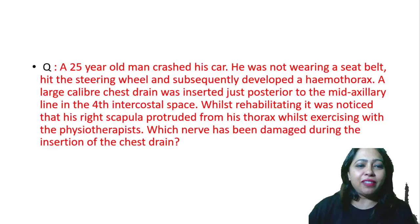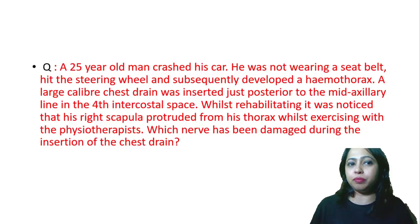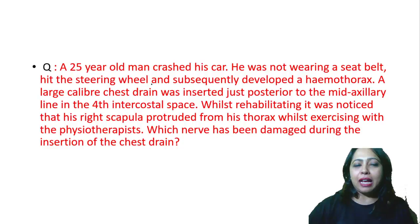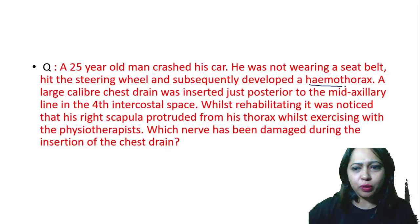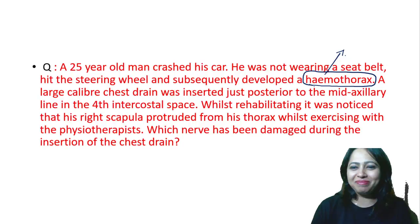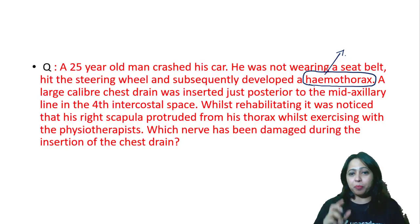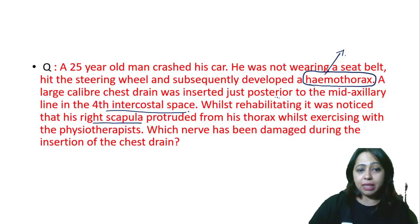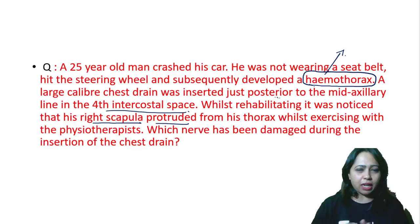A 25-year-old man crashed his car without wearing a seat belt. He hit the steering wheel and developed a hemothorax. A large-caliber chest drain was inserted posterior to the mid-axillary line in the fourth intercostal space. While rehabilitating with a physiotherapist, it was noticed that his right scapula protruded — a condition called winging of the scapula. Which nerve was damaged during insertion of the chest drain?